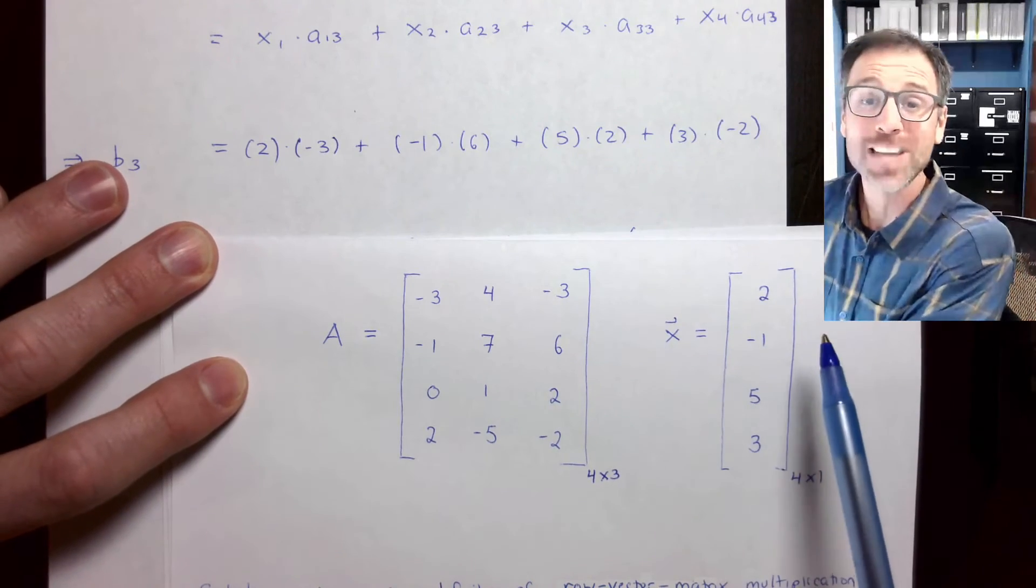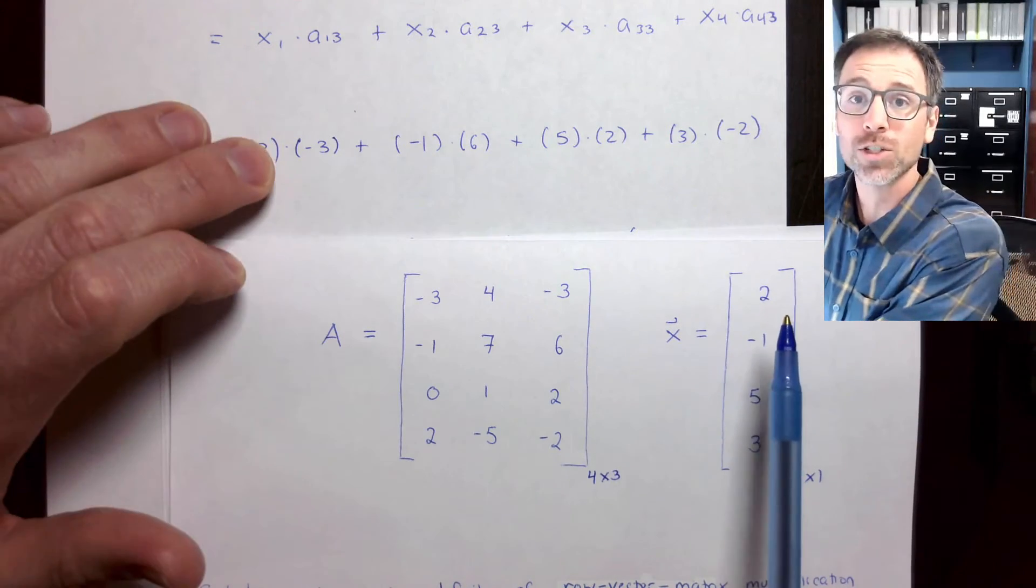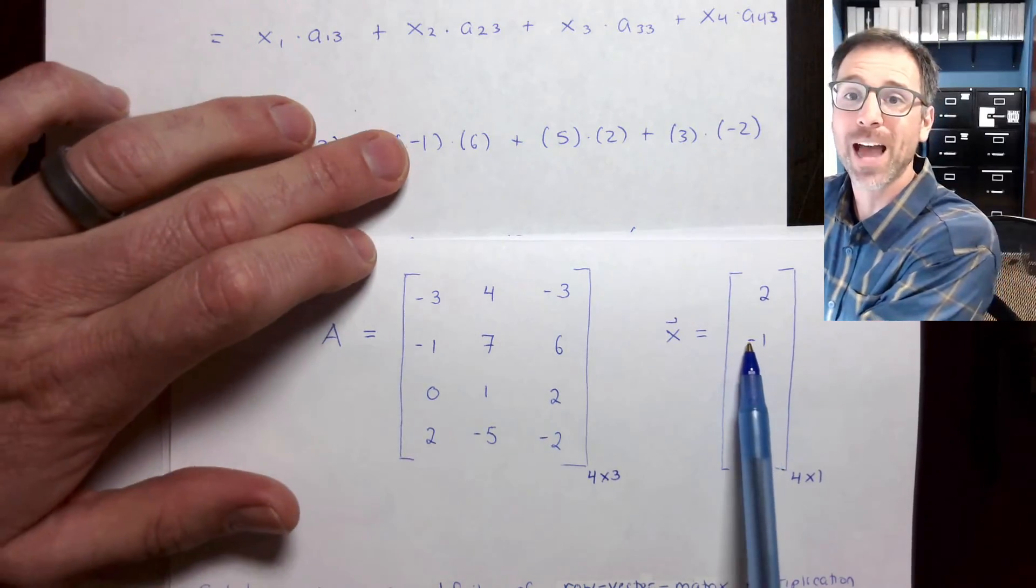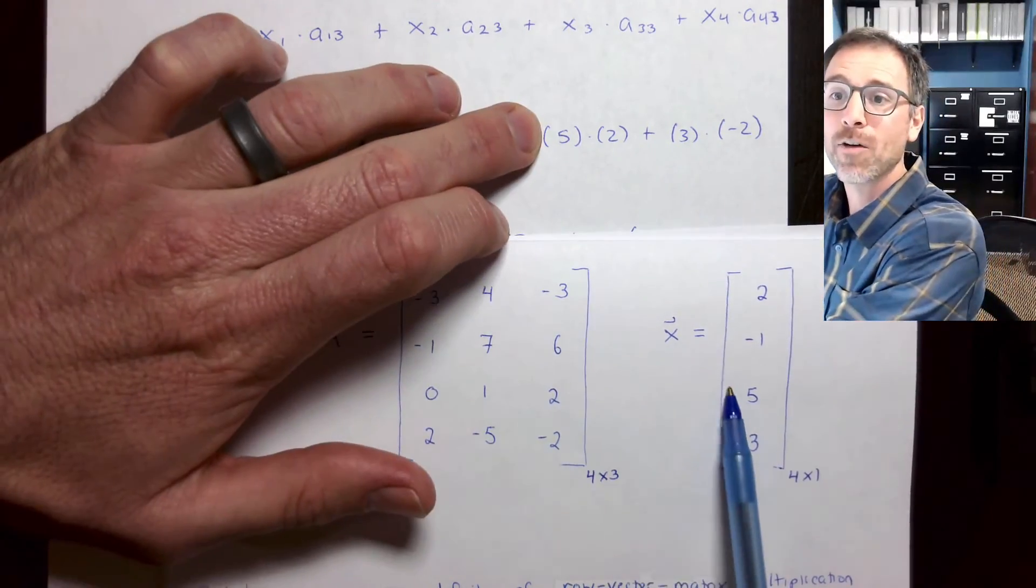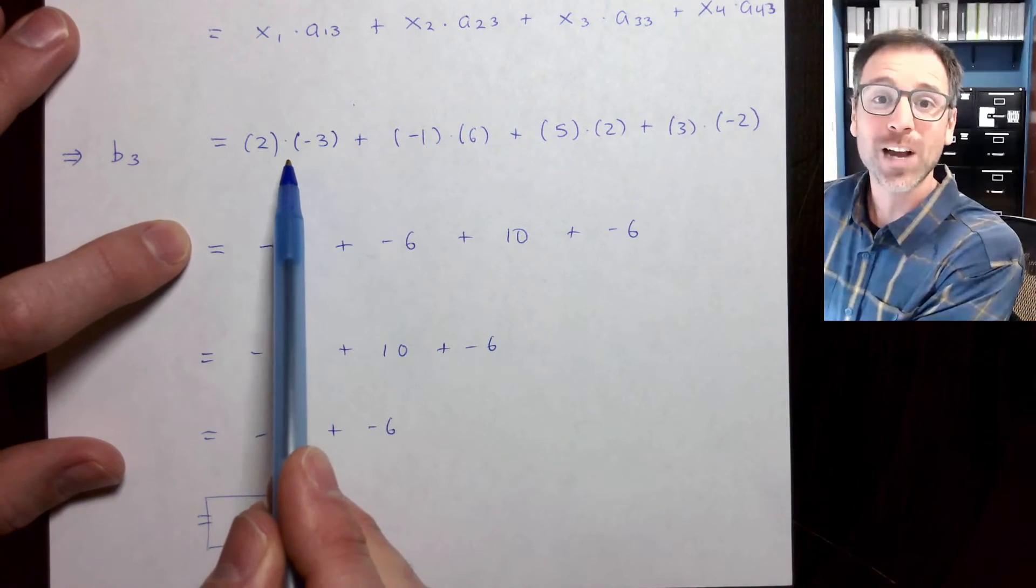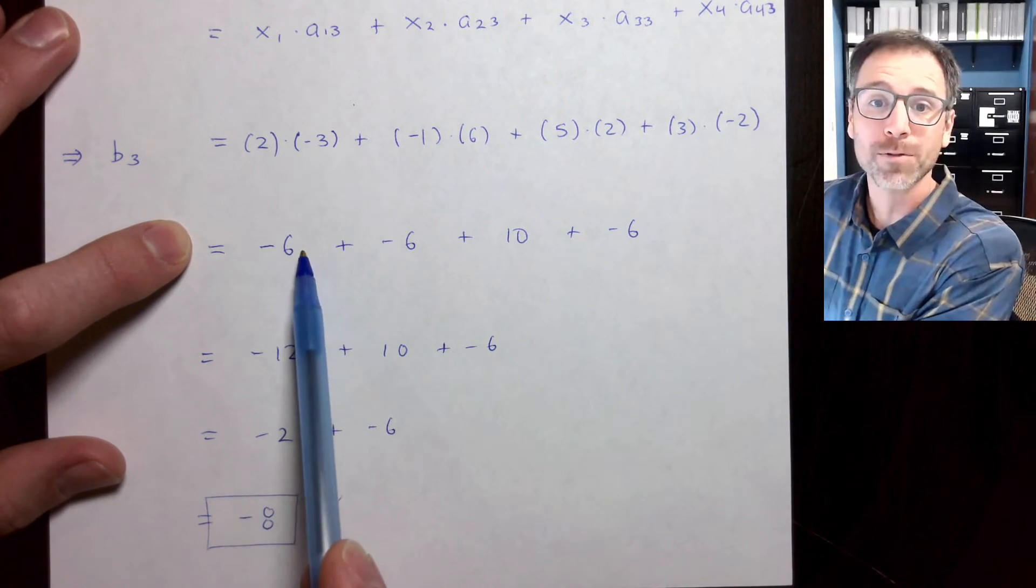Once again, I just use the definitions that we had to fill in each individual value. So x1 is 2. We got the first entry of the third row is negative 3. And then I add that to negative 1 times 6, 5 times 2, 3 times negative 2.